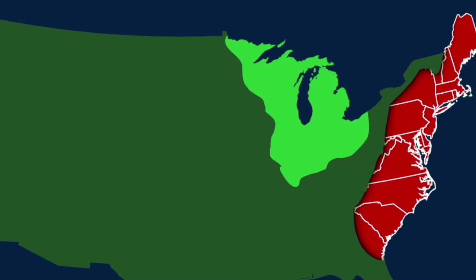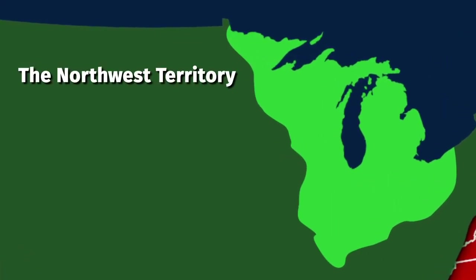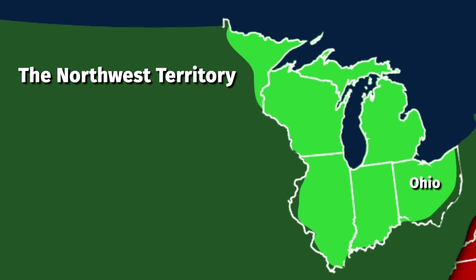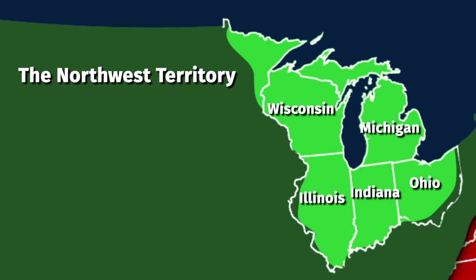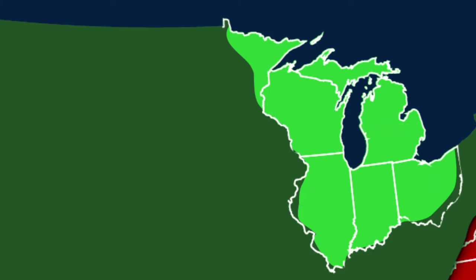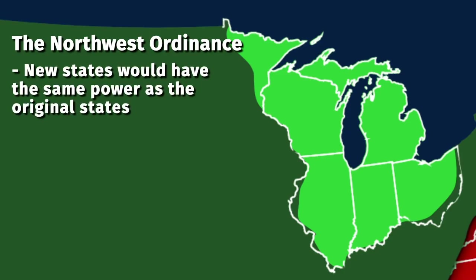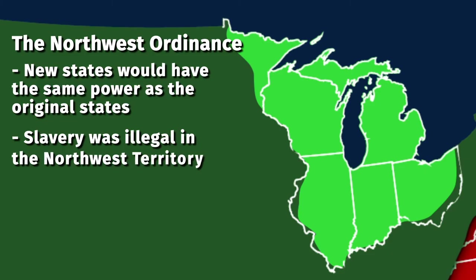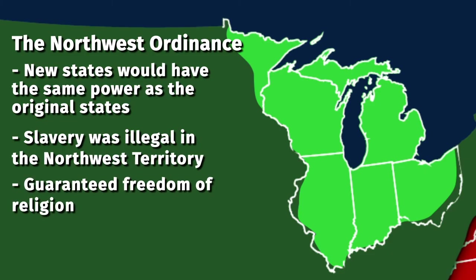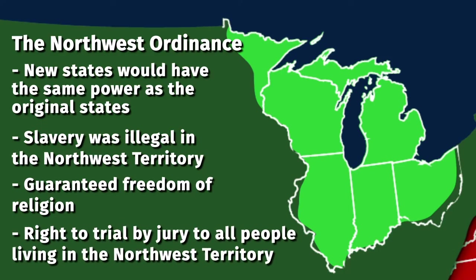The Northwest Ordinance established the Northwest Territory, which included the modern-day states of Ohio, Indiana, Illinois, Michigan, and Wisconsin. The law established rules for admitting new states and guaranteed that new states would have the same powers as the original states. The Northwest Ordinance was also the first law to limit the spread of slavery in the United States, making slavery illegal in the Northwest Territory. Finally, the law guaranteed the freedom of religion and the right to trial by jury to all people living in these territories.